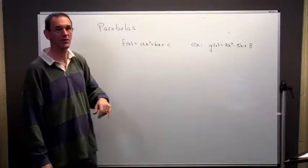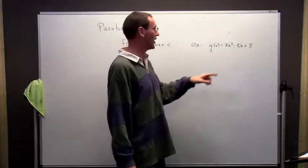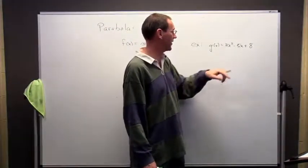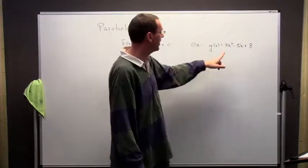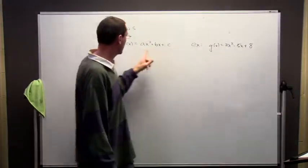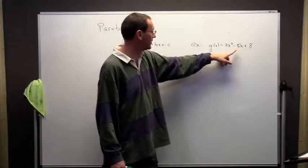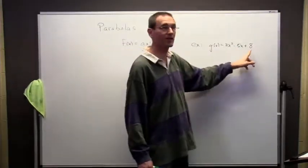a, b, and c are constants. So an example of a parabola would be an equation like this: 3x squared minus 5x plus 8. And in this case, a is 3, b is minus 5, and c is 8.